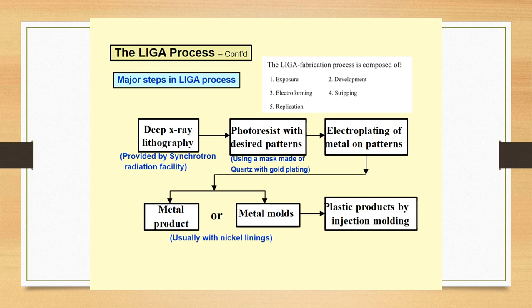What are the major steps in a LIGA process? Broadly, we can classify the LIGA fabrication process as composed of five major steps: first is exposure using x-rays, then development, third is electroforming, then stripping, and fifth is replication.